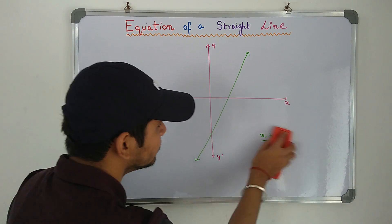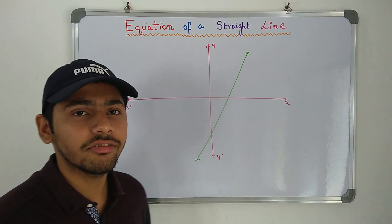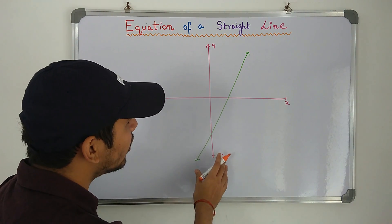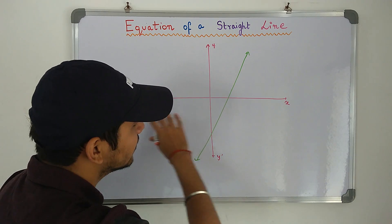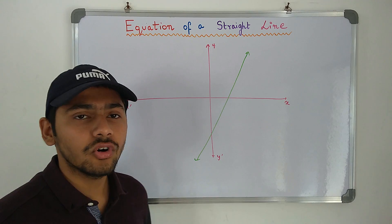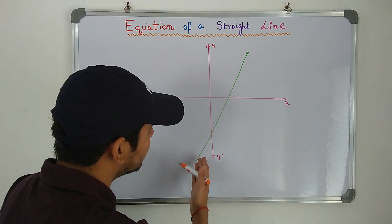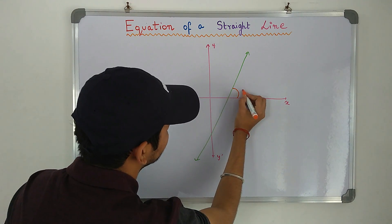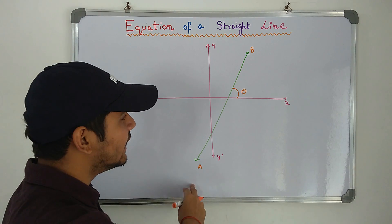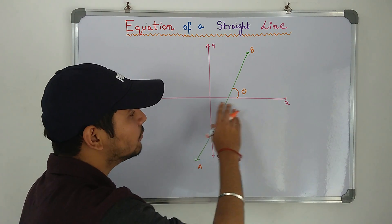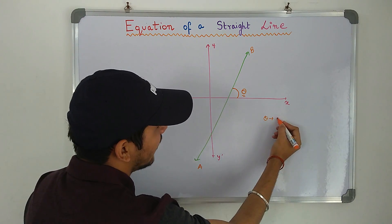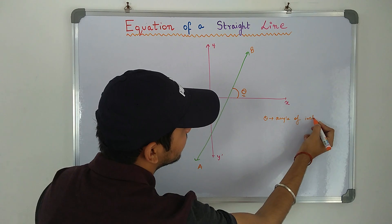The first concept we need to know is the angle of inclination. For example, take a particular line that is neither parallel nor perpendicular to the major axes — it is oblique with respect to the Cartesian axes. The angle this straight line makes with the positive side of the x-axis is called the angle of inclination. So for line AB, the straight line makes an angle theta with the positive side of the x-axis — that is the right-hand side — and theta is called the angle of inclination.